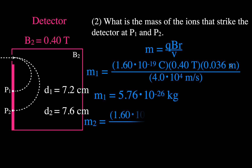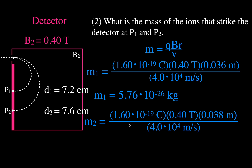For P2, all values are the same except the distance is 7.6 centimeters. Half of that is 3.8 centimeters, which converts to 0.038 meters. Everything must be in meters. Plugging in gives the total mass for the second isotope.